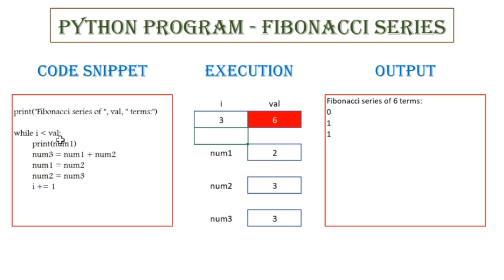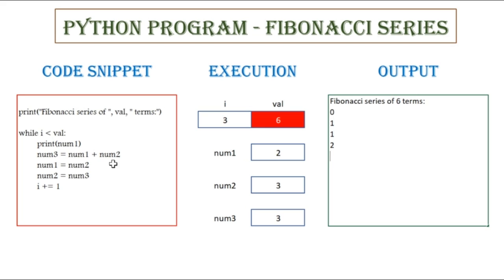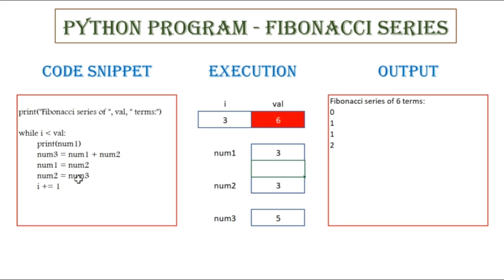3 less than 6 — that is true. So print num1, the value of num1 is 2, so 2 gets printed in the output window. Num3 equals num1 plus num2, so 2 plus 3, now num3 will become 5. Num1 equals num2, num2 is 3, so num1 will also become 3. Num2 equals num3, the value of num3 is 5, so num2 also becomes 5. i plus equals 1, so now i is going to be 4.